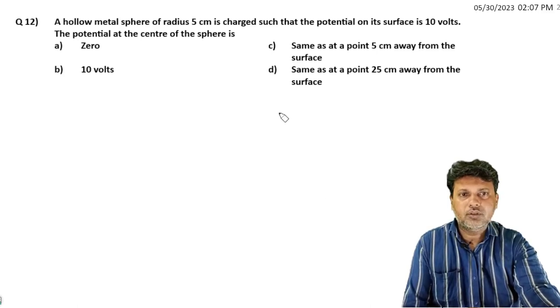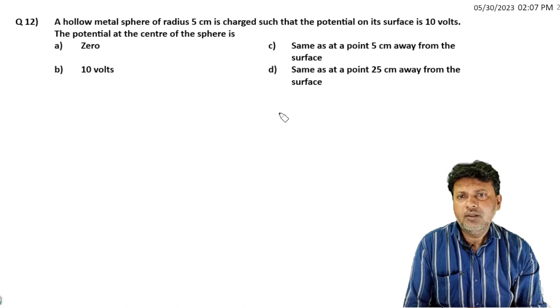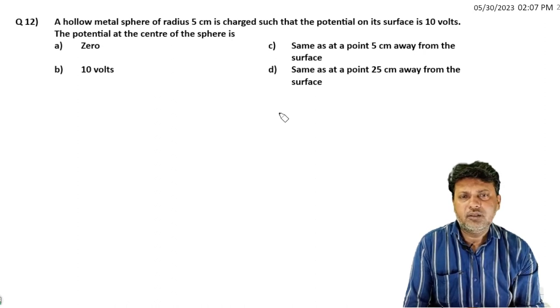Hello, next question. A hollow metal sphere of radius 5 cm is charged such that the potential on its surface is 10 volts. The potential at the center of the sphere is?